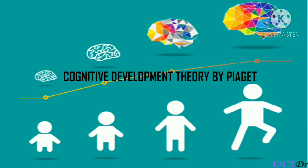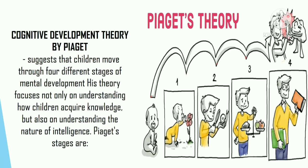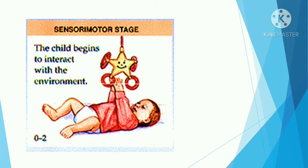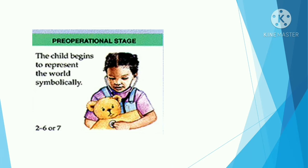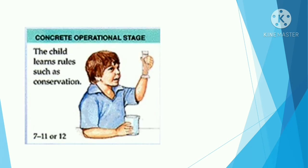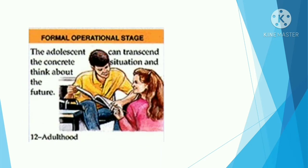Cognitive Development Theory by Jean Piaget: Piaget suggests that children move through four different stages of mental development. His theory focuses on how children acquire knowledge and the nature of intelligence. The stages are: Sensorimotor (0–2 years) — the child begins to interact with the environment; Preoperational (2–6 or 7 years) — the child begins to represent the world symbolically; Concrete Operational (7–11 or 12 years) — the child learns rules such as conservation; Formal Operational (12 years to adulthood) — the individual can think abstractly and about the future.